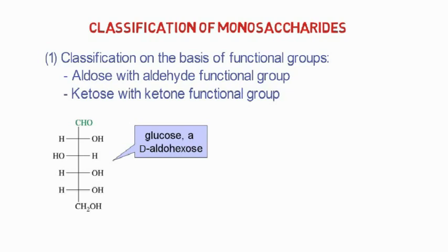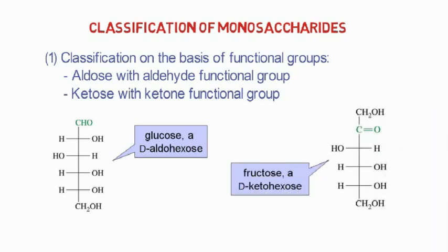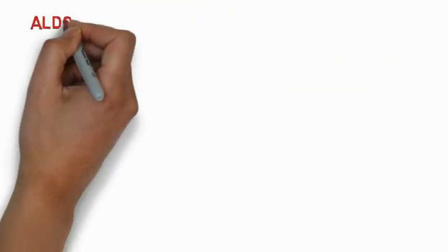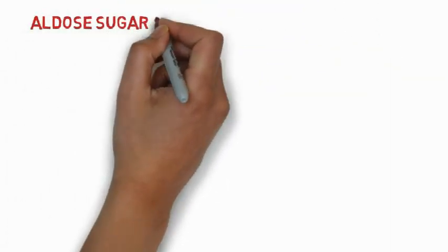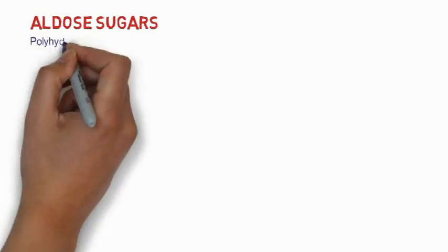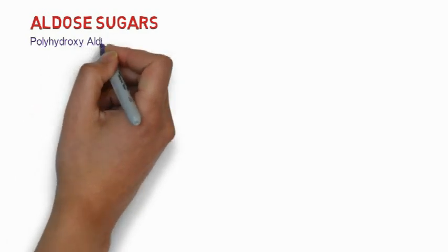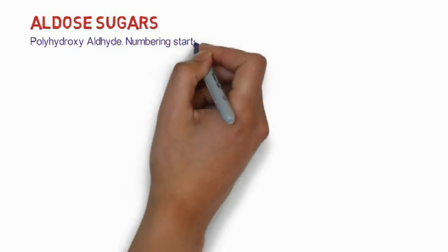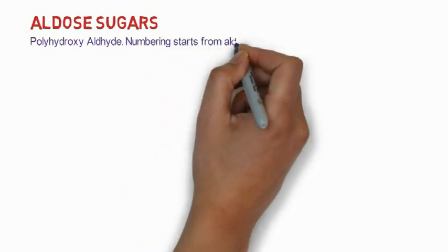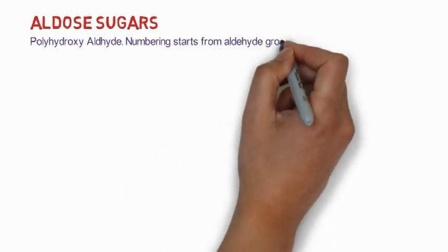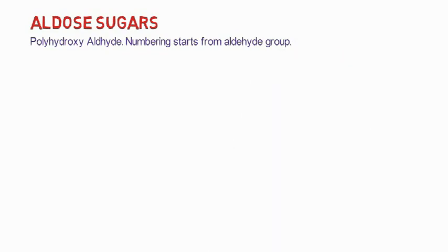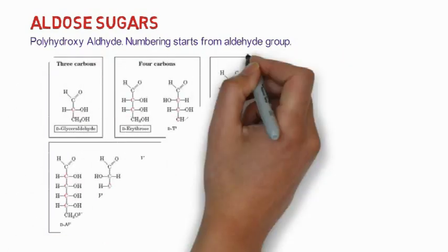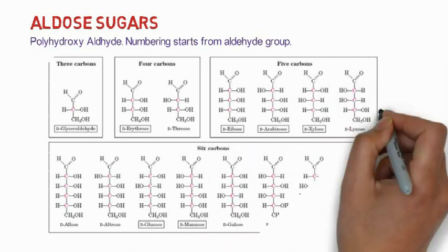You can see here that aldose contains a CHO (aldehyde) group, while fructose has a ketone group. Aldose sugars are polyhydroxy aldehydes and their derivatives. The numbering usually starts from the aldehyde group, which is considered carbon number one. You can see here three-carbon, four-carbon, five-carbon, and six-carbon aldose sugars as different examples.